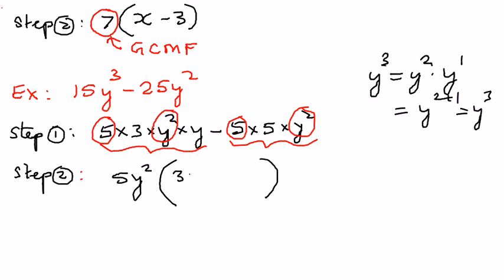So 3y is left in the first set of equation, and then 5 is left in the second set of equation. So now, if we can, if to check our work,